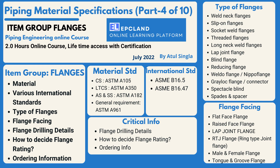Piping material specification Part 4 of 10 covers the item group Flanges. Material standards will include carbon steel, low temperature carbon steel, alloy steel, stainless steel, and general requirements. We will look into each ASTM standard and all important clauses — what information is required and where to get it. Then international standards: the various clauses of ASME B16.5 and B16.47 with respect to flanges.